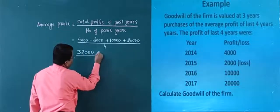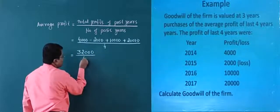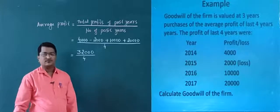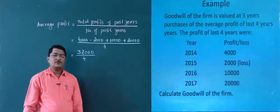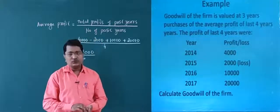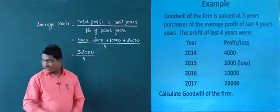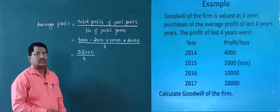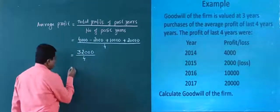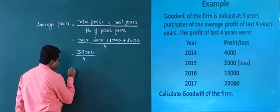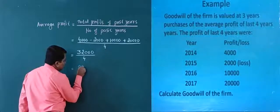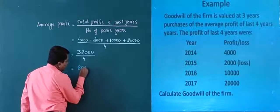Divide 32,000 by 4. The answer comes to 8,000.